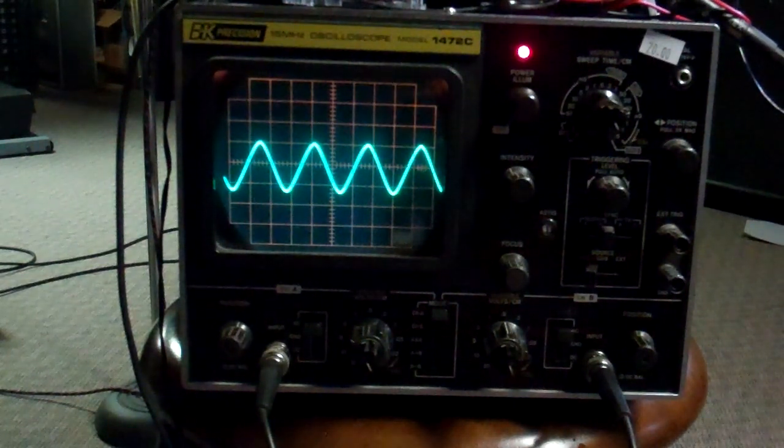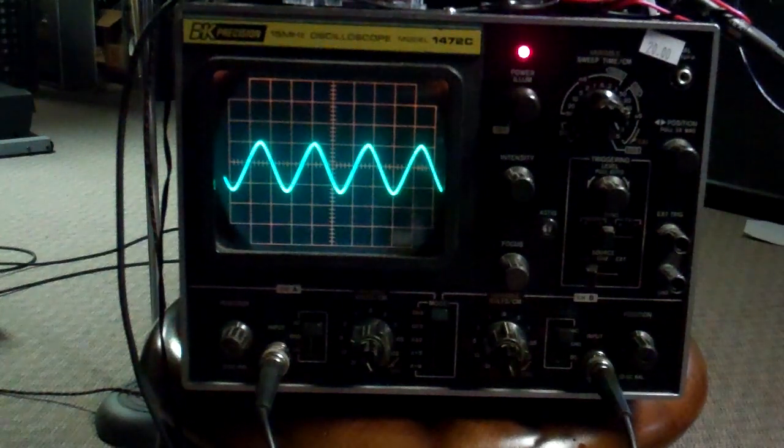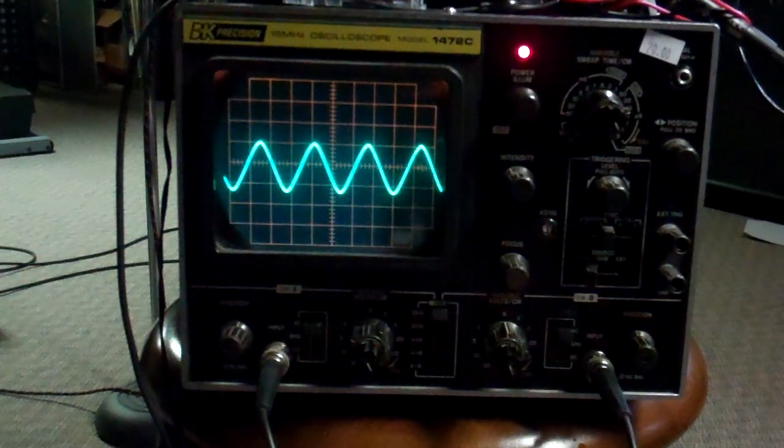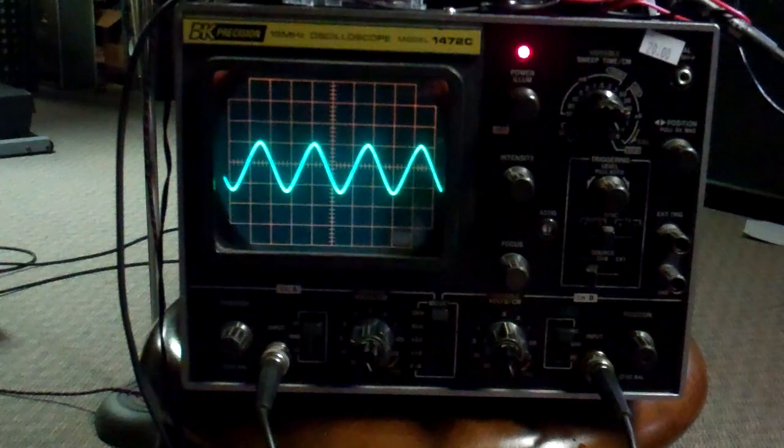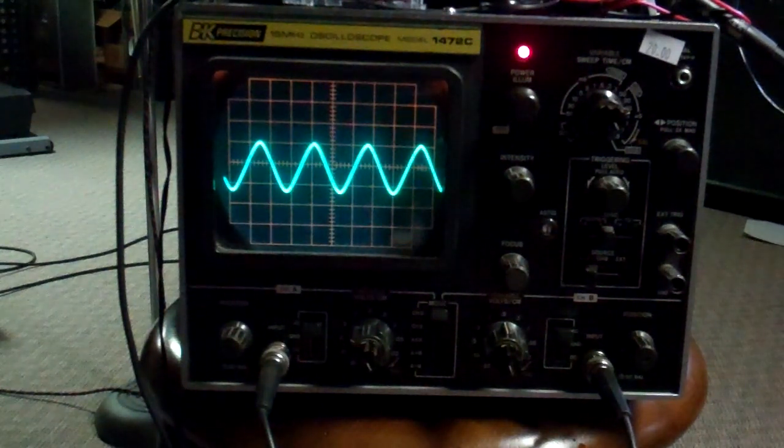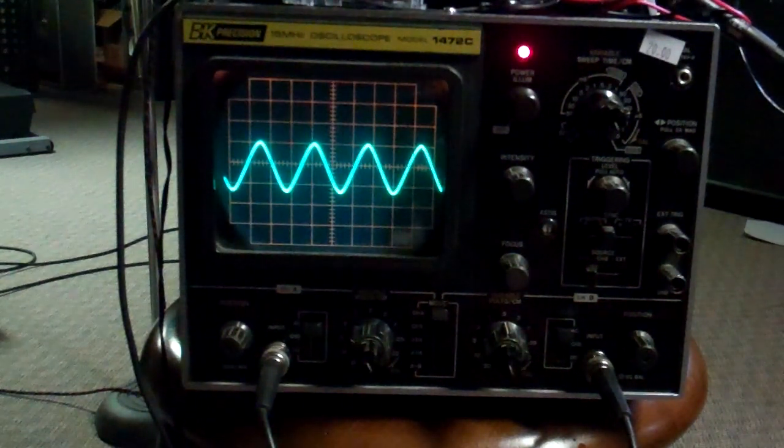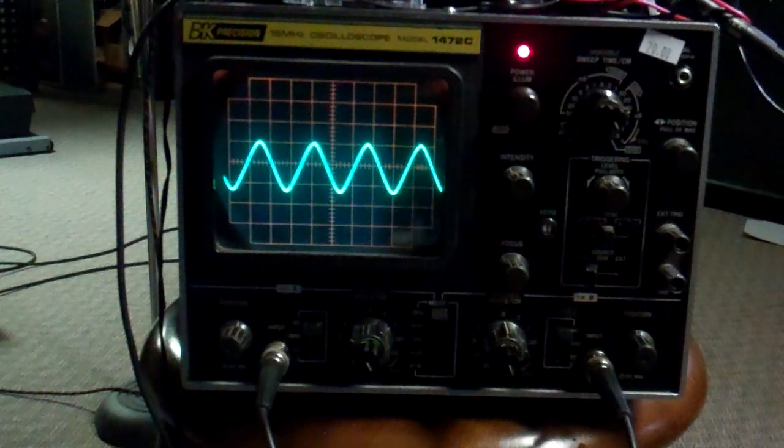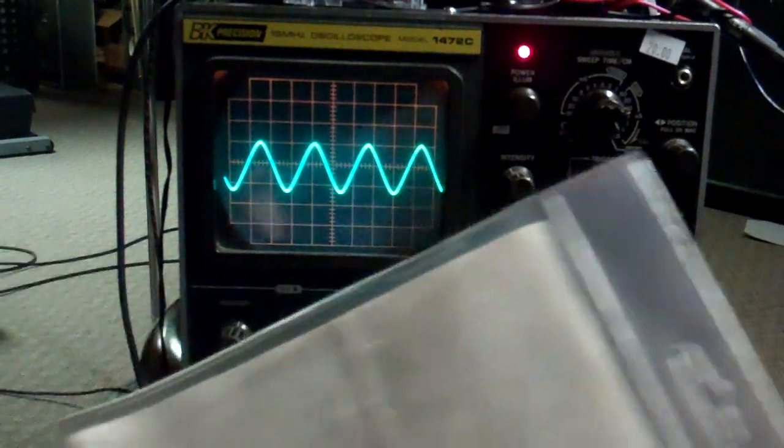This is a BK Precision 15 megahertz oscilloscope, model 1472C for Charlie. Picked it up at an estate sale, and I have the extra adaptamajigs for the probes.